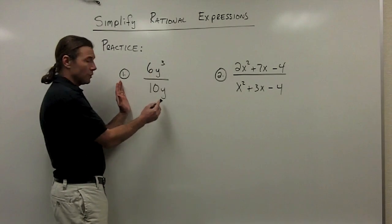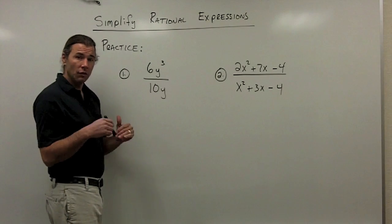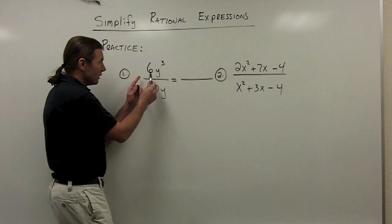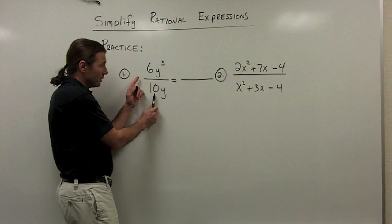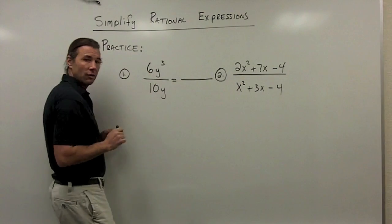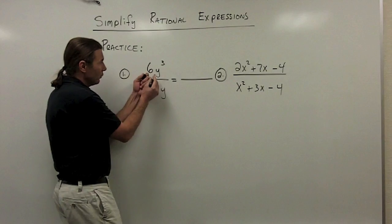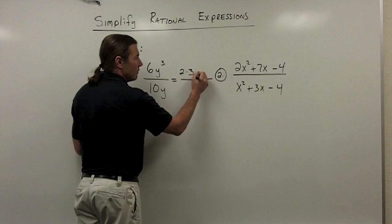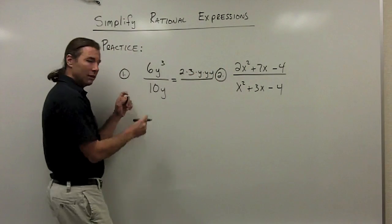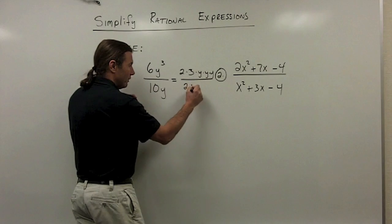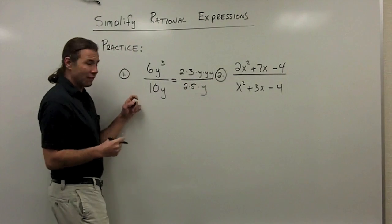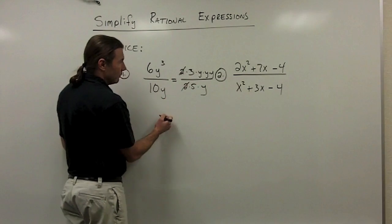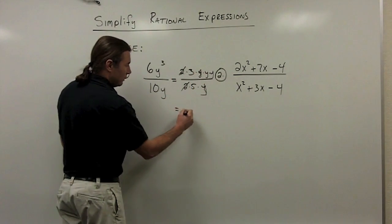Let's take a look at practice problem 1. We're going to simplify this rational expression. The first thing we need to do is factor the numerator and denominator. I have just one term in both the numerator and denominator, so I can look at them individually. I factor the 6 as 2 times 3. I factor y to the 3rd, which means I have 3 of those y's. In the denominator I factor 10 as 2 times 5, times y. I've got both numerator and denominator factored, so now I'll divide out the common factors — a common factor of 2 and a common factor of y.